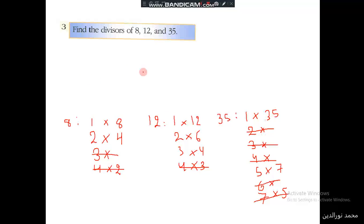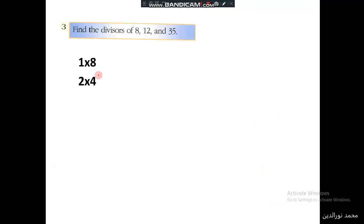Then we write them as a list. The divisors of 8, so we are repeating the same process: 1 times 8, 2 times 4, 1 times 12, 2 times 6, 3 times 4, 1 times 35, 5 times 7. So the divisors of 8 are 1, 2, 4, and 8.